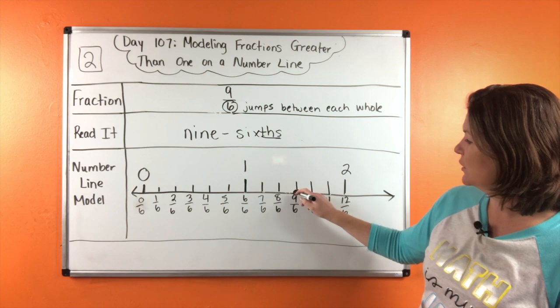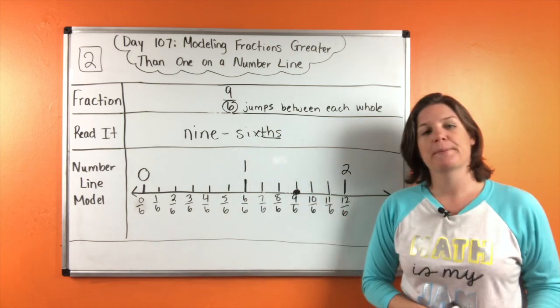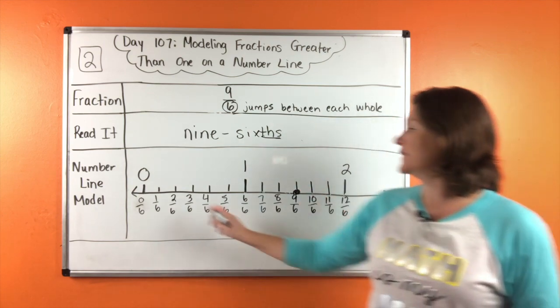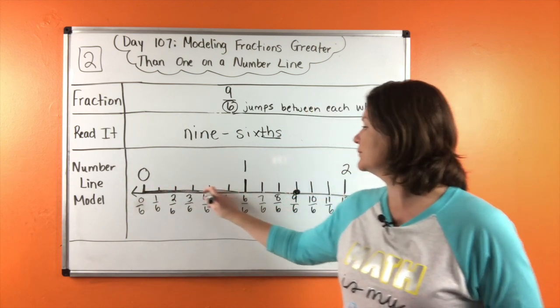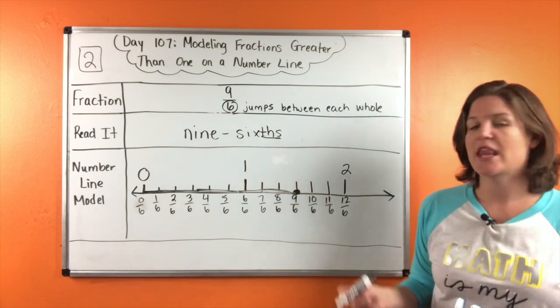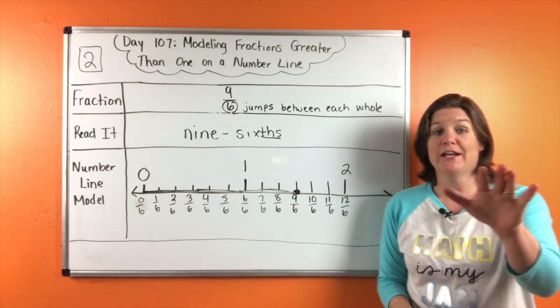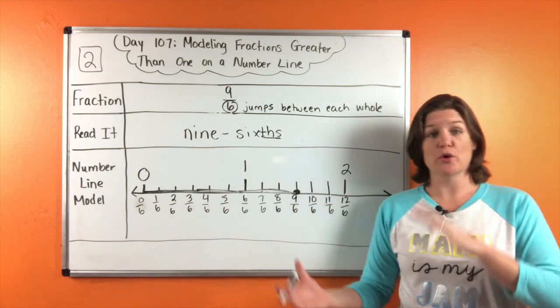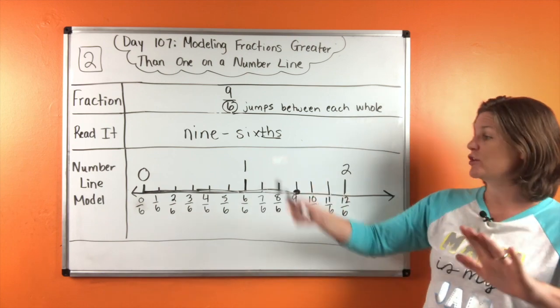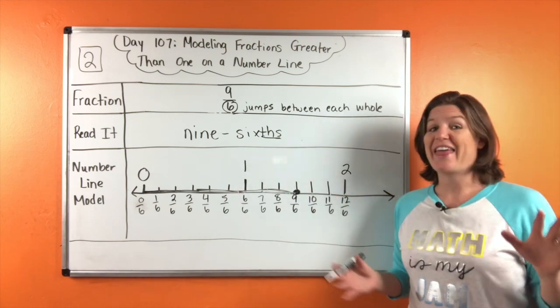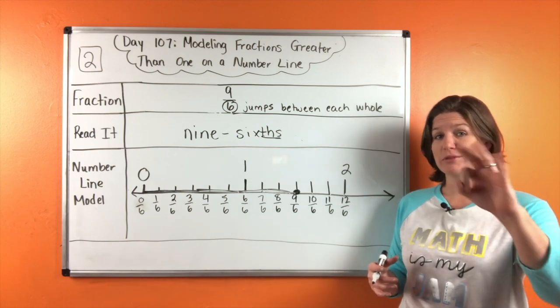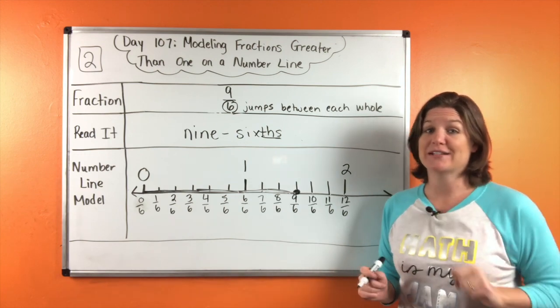So right at nine sixths, we're going to plot that point, and finally shade in the amount that we traveled to get there. Just like that. All right. Now I know you have a lot of catching up to do, so go ahead and pause the video. Make sure you're counting six hops between each hole, six jumps between each hole, and then go ahead and try number three on your own and come back to check your work.